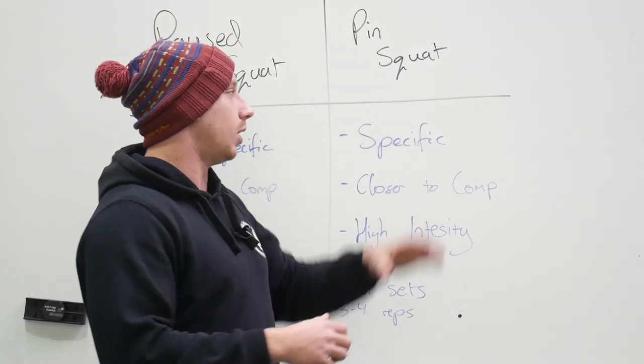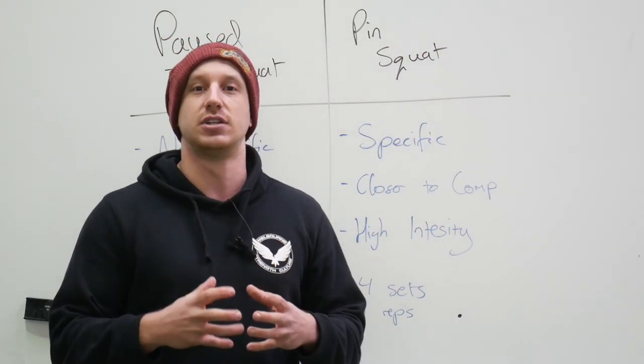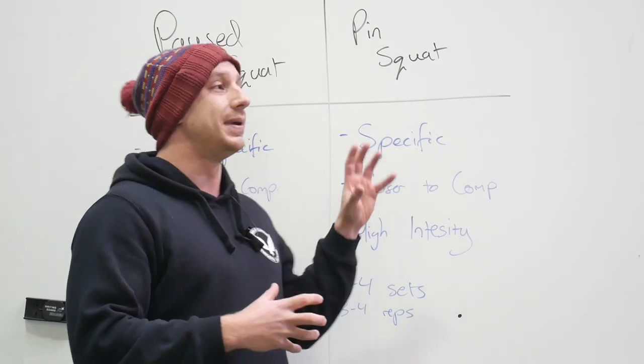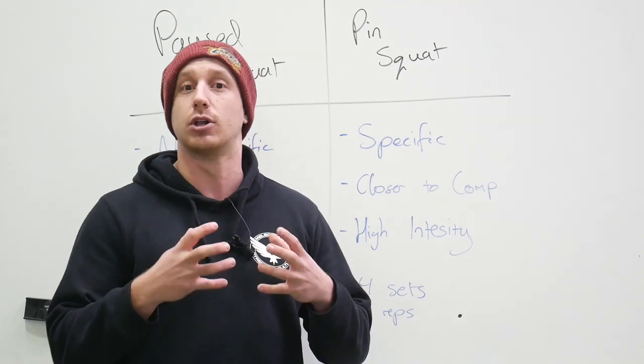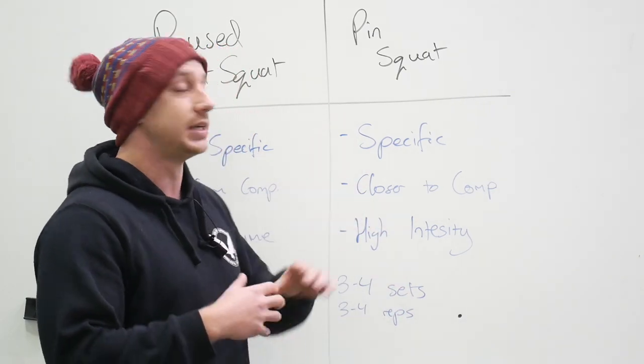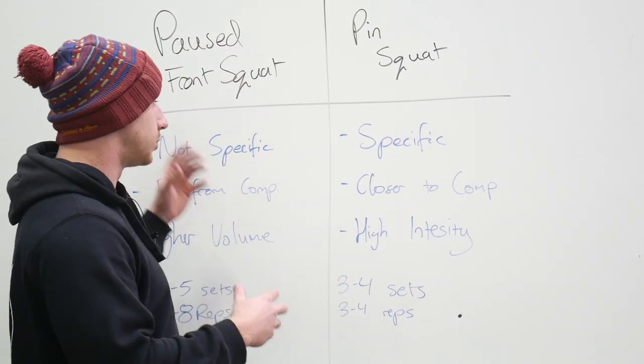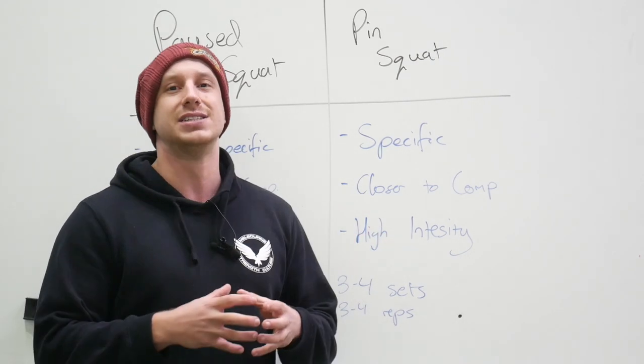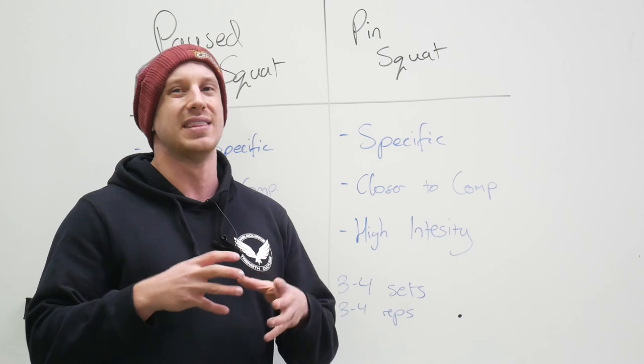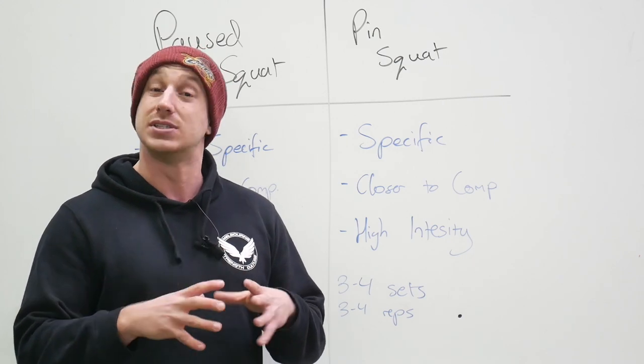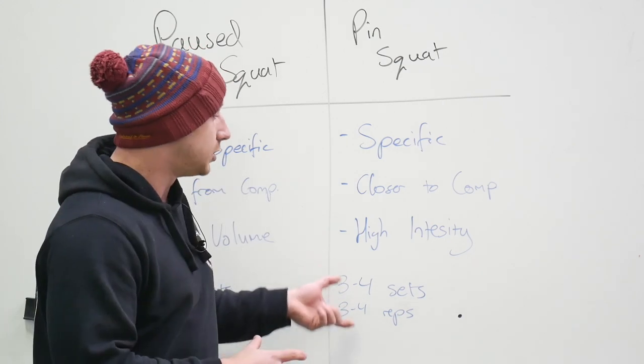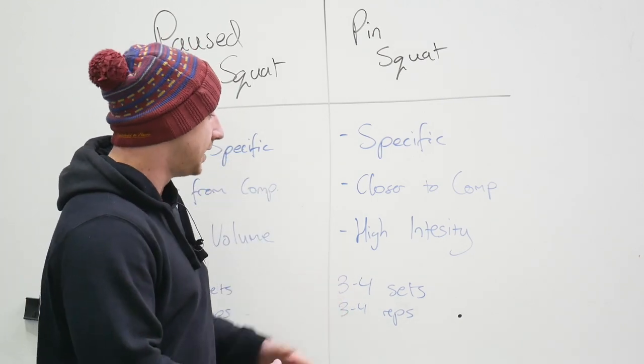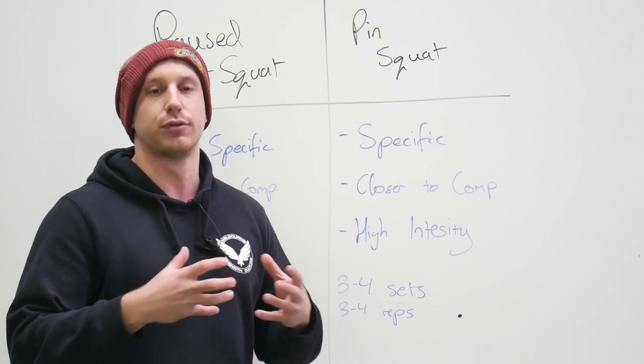Whereas with the pin squat, it's a far more specific lift to the actual competition low bar squat itself. So we can use this a bit deeper into the program. So a bit closer to the comp day because it is far more specific than the pause front squat. We're also going to use this at a much higher intensity. So we're going to be toying around that 75 to 80% range. And we're going to be doing a far lower volume as a result of that higher intensity. So for us here, it's three to four sets of three to four reps.